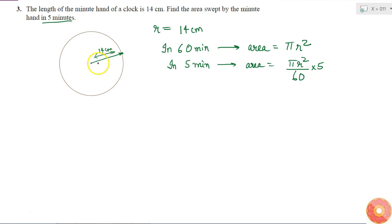60 minutes is the same as 360 degrees, so 5 minutes will be 360 divided by 60 times 5. So instead of writing like that, I can directly write 5 by 60, because 5/60th part of the circle is being covered in this area, and this is a sector.